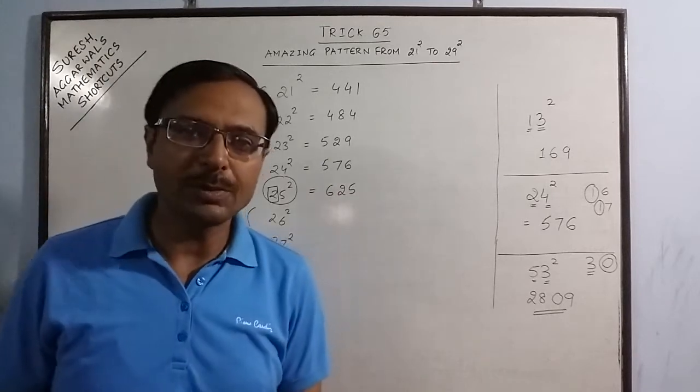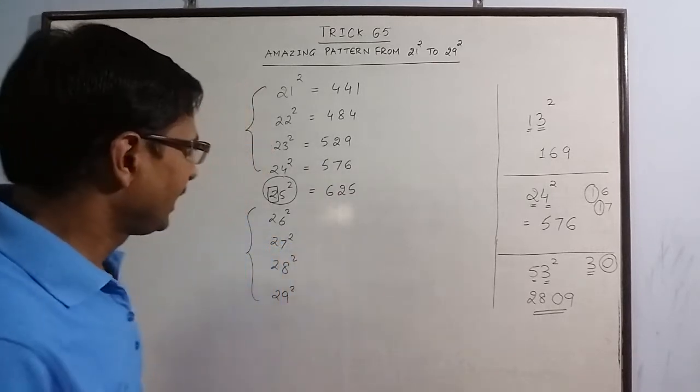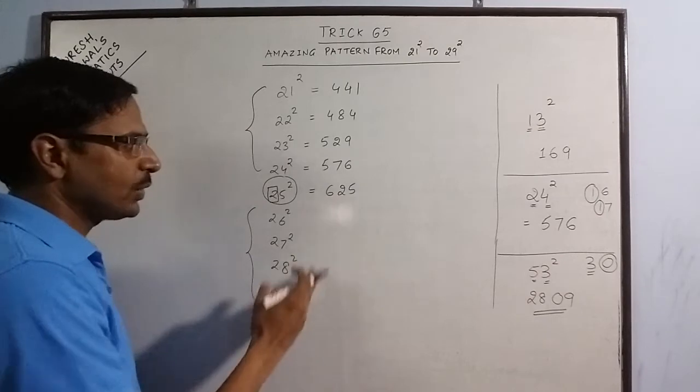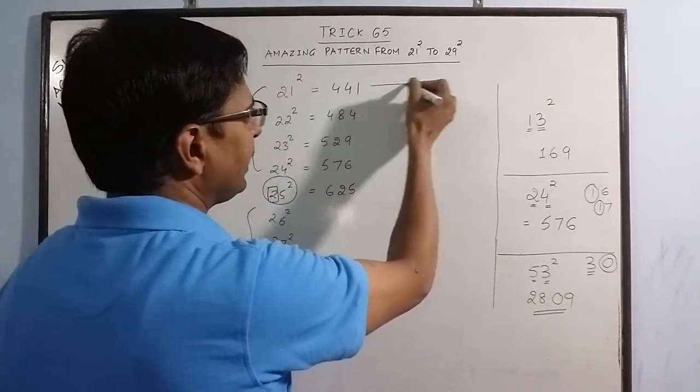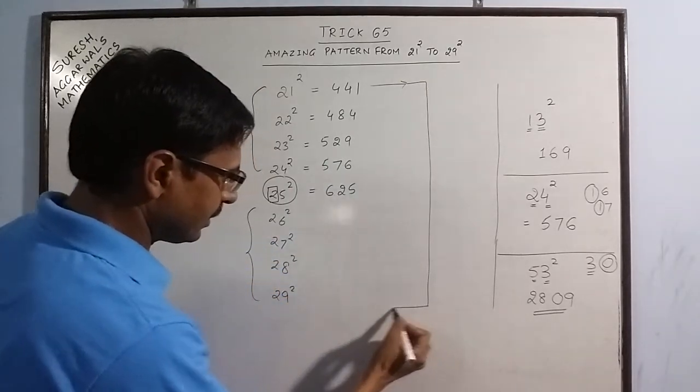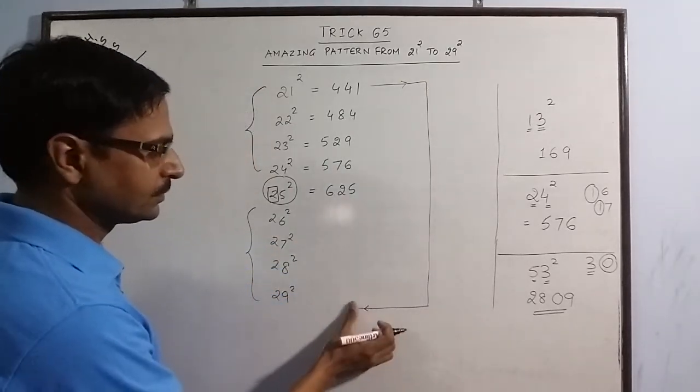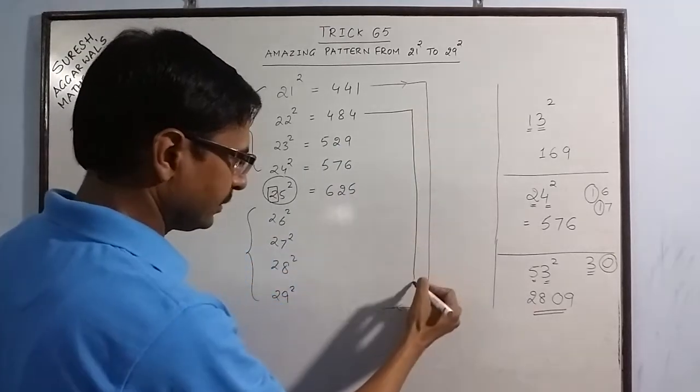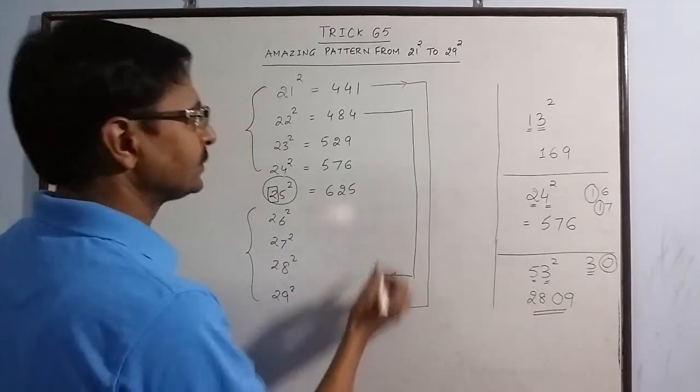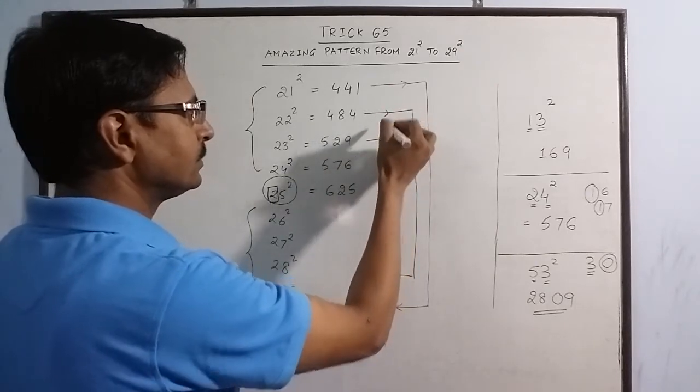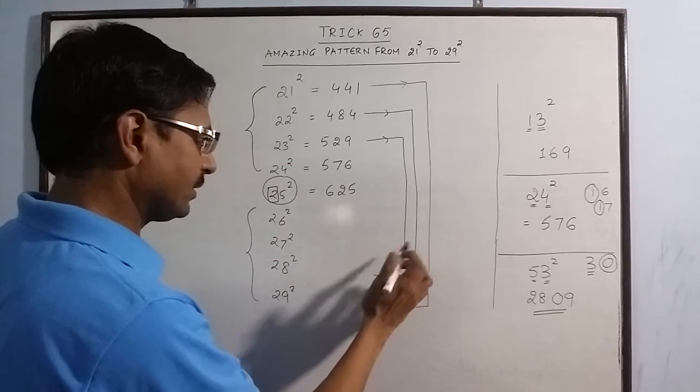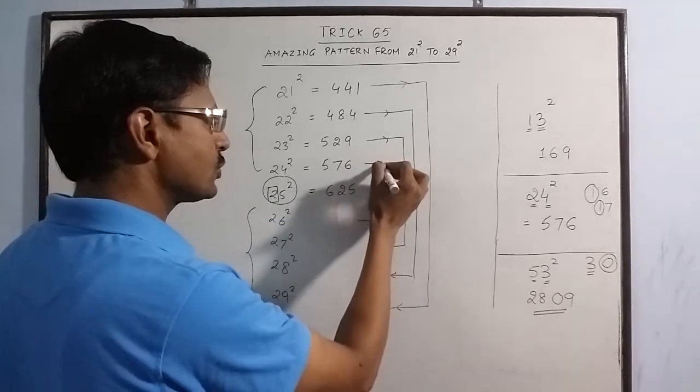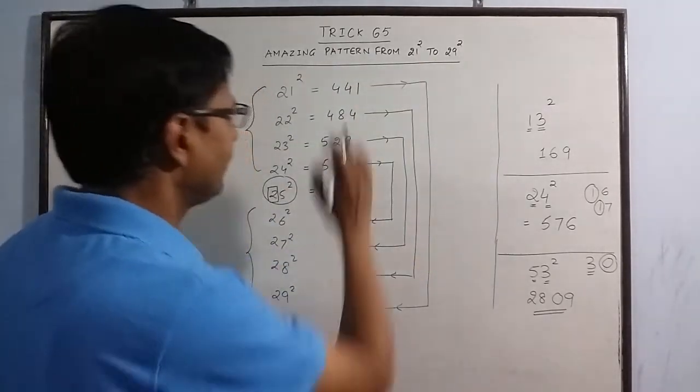Now the most important thing which is coming up. From numbers 21 to 29 there is a symmetry of squares. When we write 21 square then we can write 29 square. When we write 22 square then we can write 28 square. When we write 23 square we can easily write 27 square. And when we can write 24 square we can easily write 26 square. So there is a symmetry. First and last, second and second last.